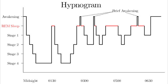Describe what happens during REM sleep. REM sleep is when dreaming happens, loss of motor tone occurs, and it is possibly said to have memory processing functions. You can also get an erection during REM sleep and there is increased brain oxygen use. The EEG waveform seen in REM sleep is beta.